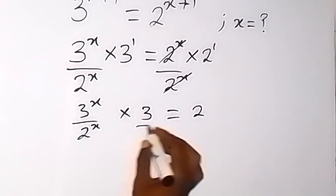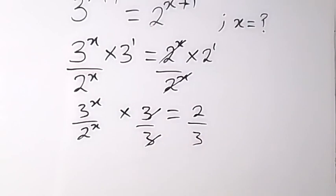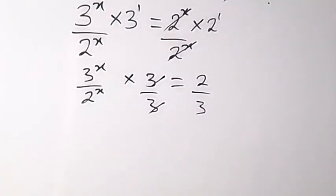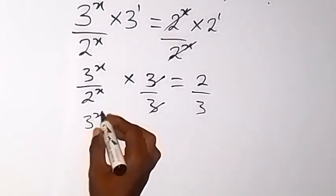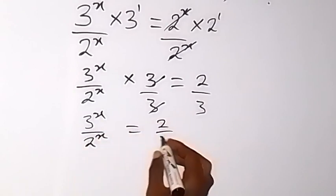So dividing this side by 3 and dividing this side by 3, 3 cancels here. And what we have left is now 3 raised to power x over 2 raised to power x equals to 2 over 3.